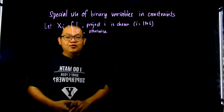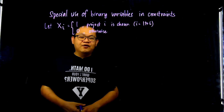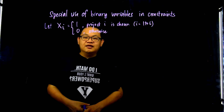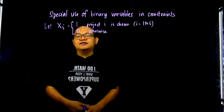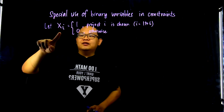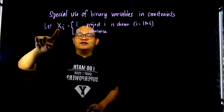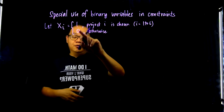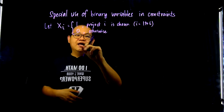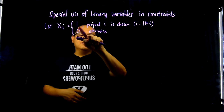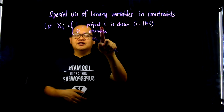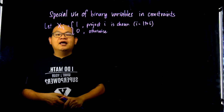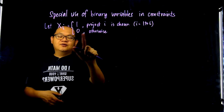Now let me give you five examples of how we use binary variables in constraints, using this definition of x sub i. x sub i is equal to 1 or 0, i.e., binary, where x sub i equals 1 if project i is chosen — and in this case we have six projects — and x sub i is 0 otherwise.